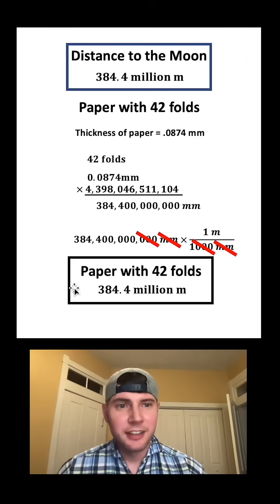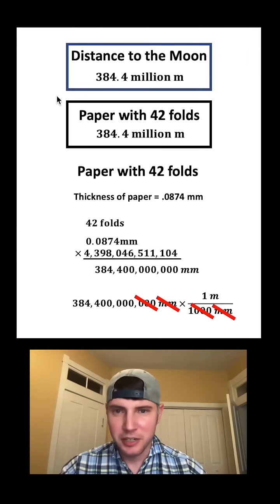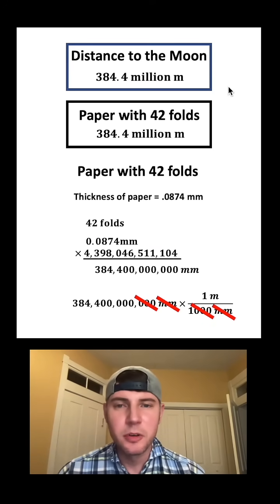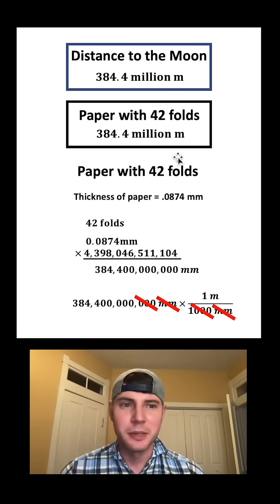Let's bring this box up here and let's compare these. The distance to the moon is 384.4 million meters, and a piece of paper with 42 folds is 384.4 million meters. The math checks out. How exciting!